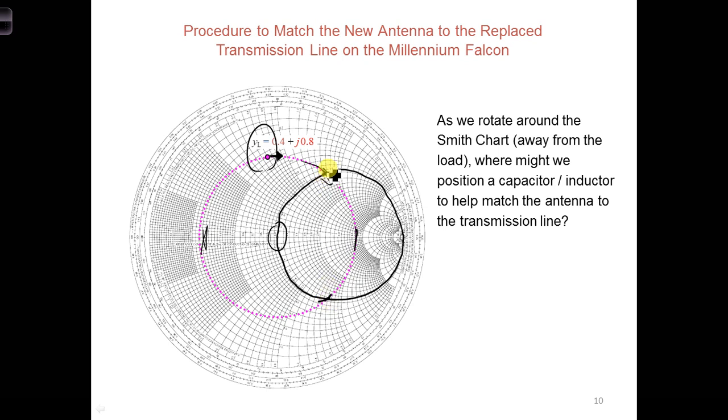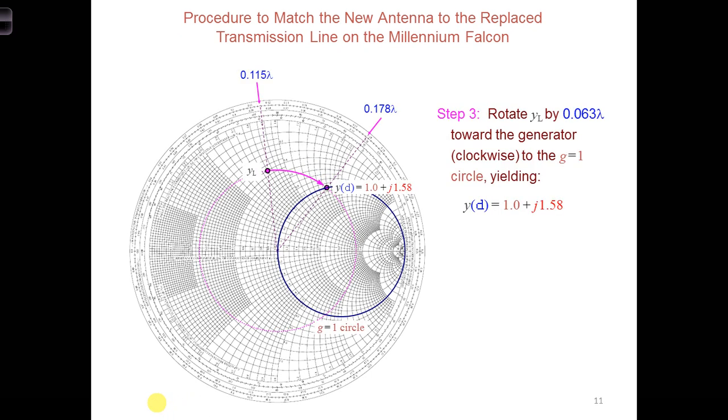Let's pick the first time the real part is equal to 1. That's shown right here. Moving down the transmission line away from the load, the plotted load admittance YL is rotated towards the generator until it lies on the G equal 1 circle right here.